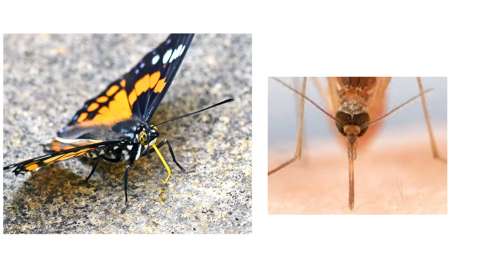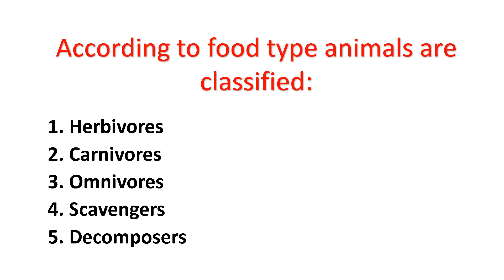Butterflies use a tube-like mouth part called proboscis to suck their food, which can be in the form of nectar or other juices. You can see the yellow part called proboscis which helps the butterfly suck its food. Mosquitoes and bed bugs use a needle-like mouth part to penetrate the food and a tube-like mouth part to suck the food or other fluids. According to food type, animals are classified as herbivores, carnivores, omnivores, scavengers and decomposers.